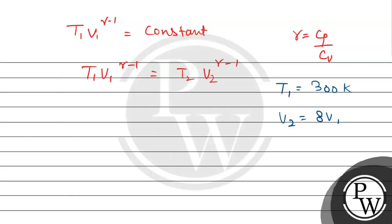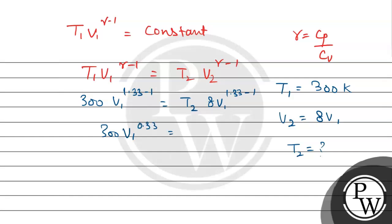The final volume V₂ is equal to 8 times V₁. From here we can find temperature T₂. T₁ is 300 Kelvin, and with γ-1 = 1.33-1 = 0.33, we write: 300 × V₁^0.33 = T₂ × (8V₁)^0.33. We can write 0.33 as 1 over 3.